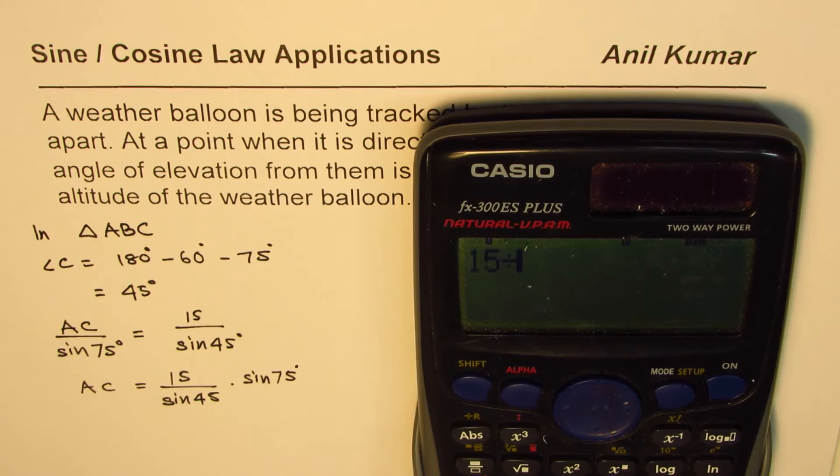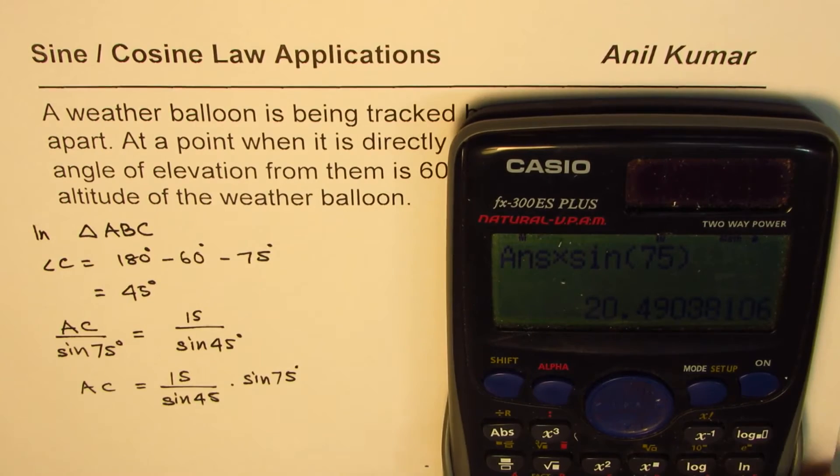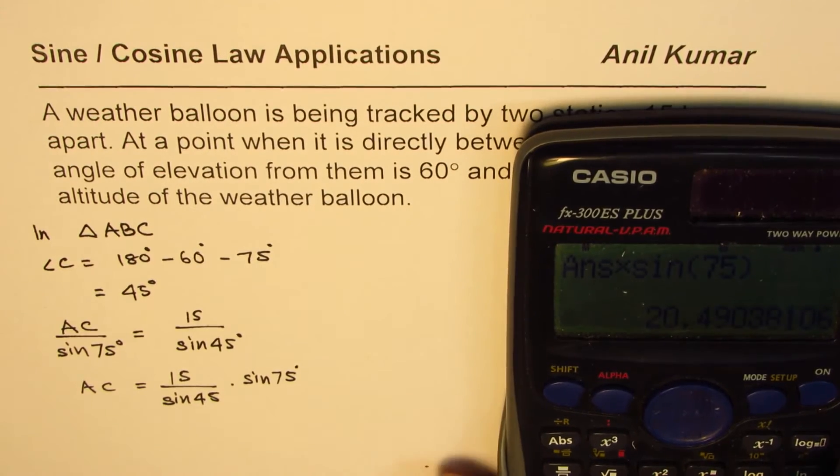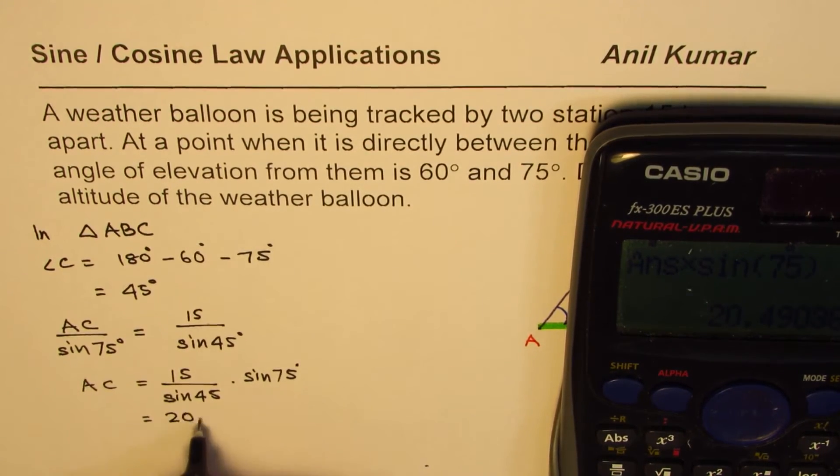So we have 15 divided by sine of 45 degrees times sine of 75 degrees. That gives us in decimals 20.49. So this is equal to 20.49. I can round this to 20.5.